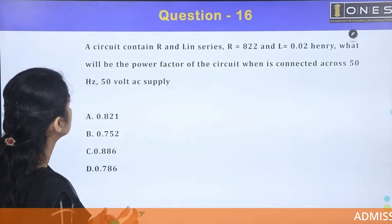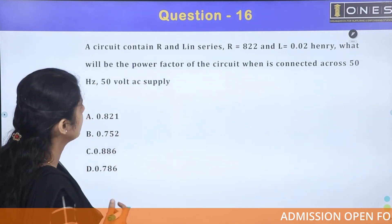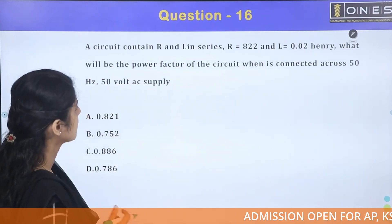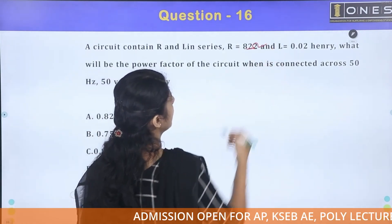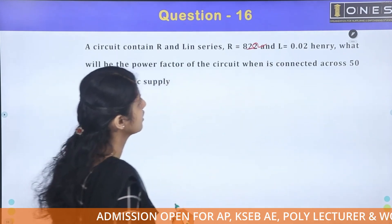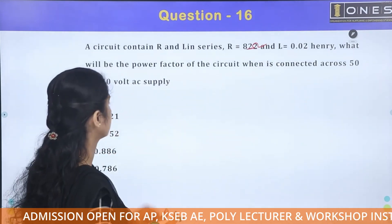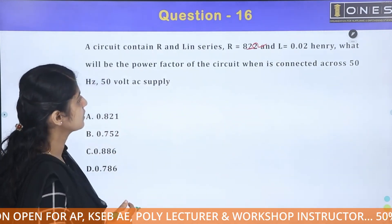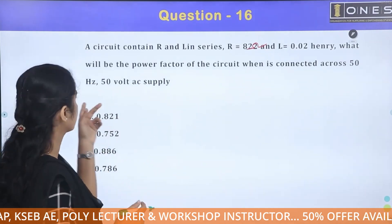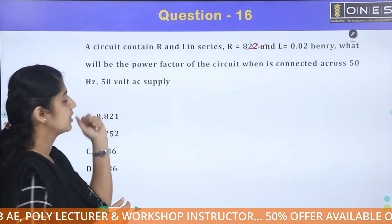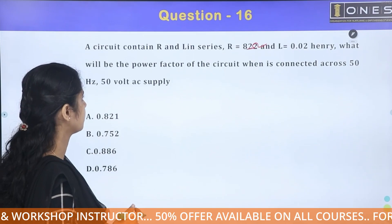A circuit contains R and L in series, where R equals 8 ohm and L equals 0.02 henry. What will be the power factor of the circuit when it is connected across a 50 hertz, 50 volt AC supply?